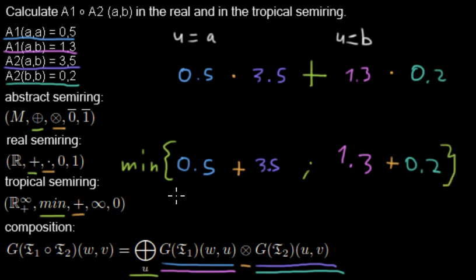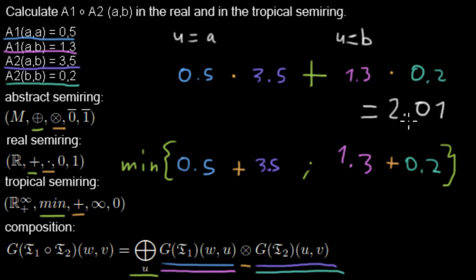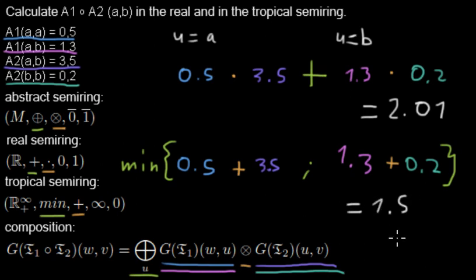The last thing is the actual calculation. For the real semi-ring, multiplying and adding gives a weight of 2.01 for this composition. For the tropical semi-ring: adding 0.5 and 3.5 gives 4, adding 1.3 and 0.2 gives 1.5, and the minimum of both is 1.5. So 1.5 is the weight of the composition in the tropical semi-ring. And now I'm done with both tasks.